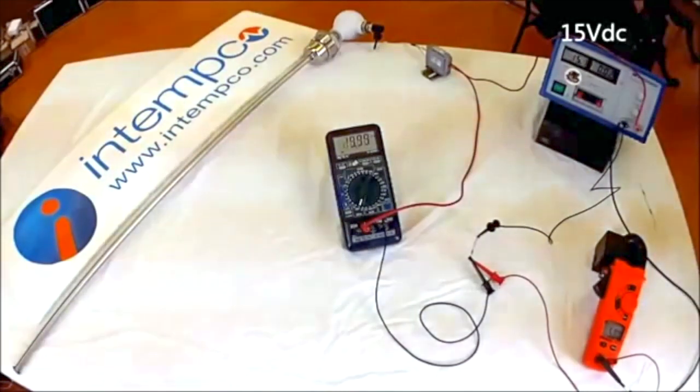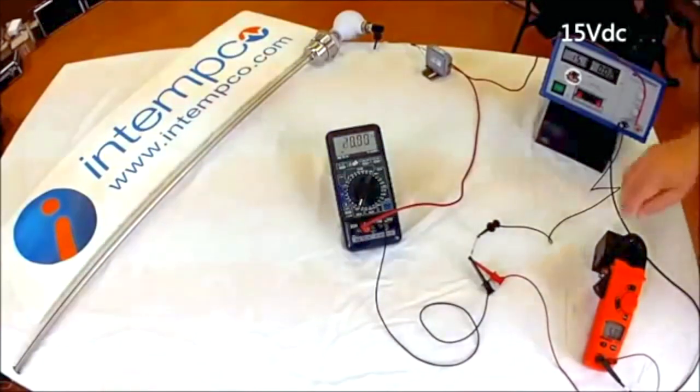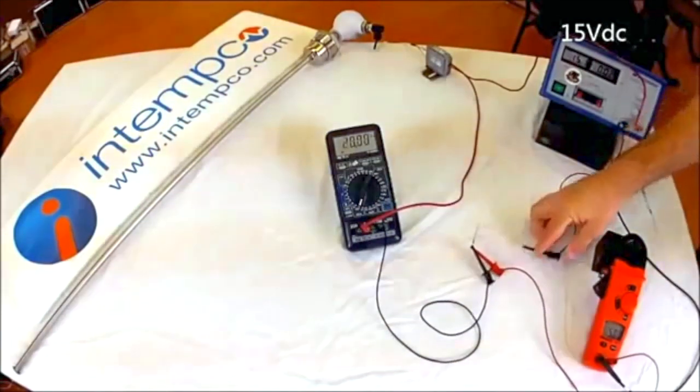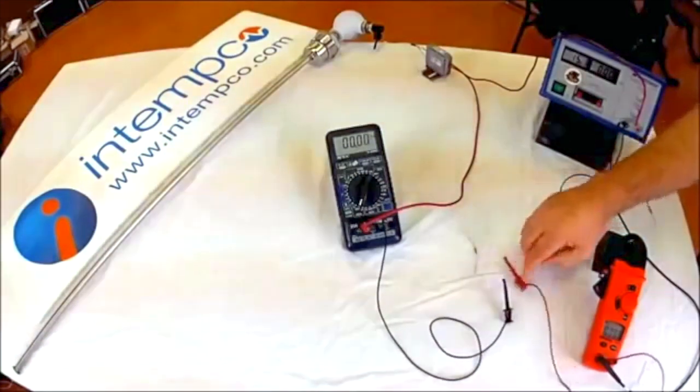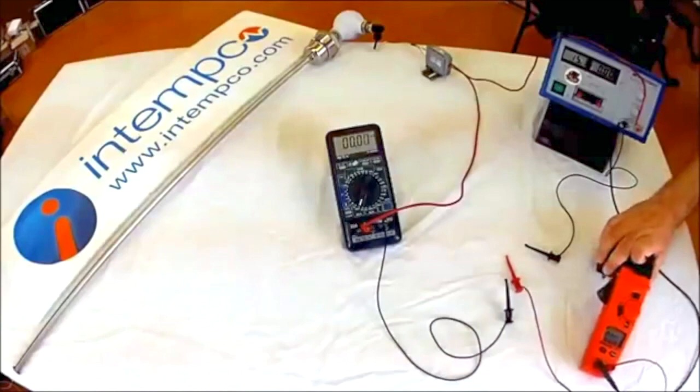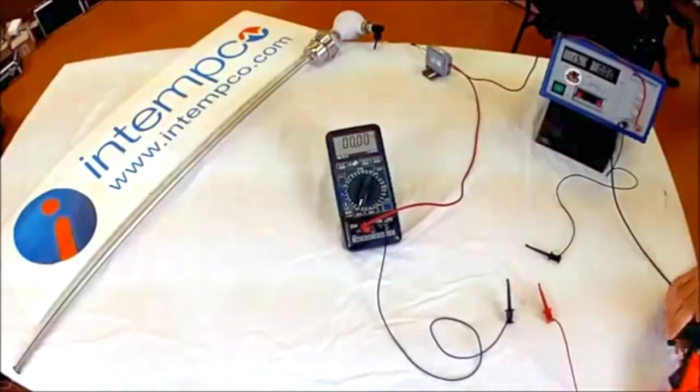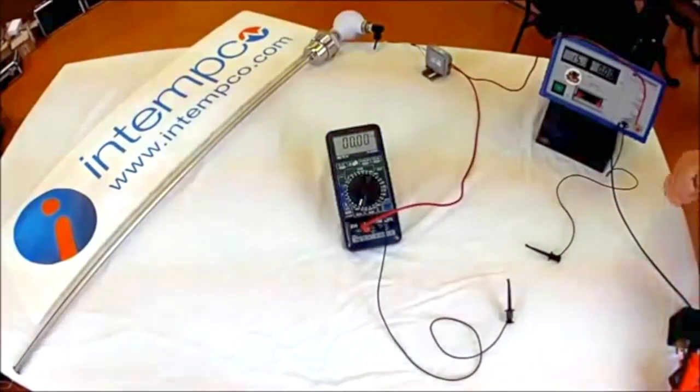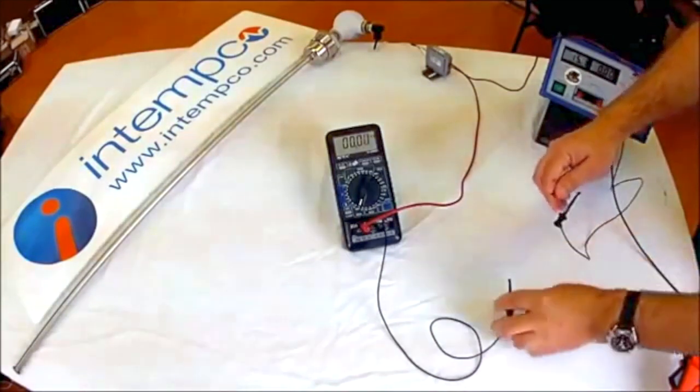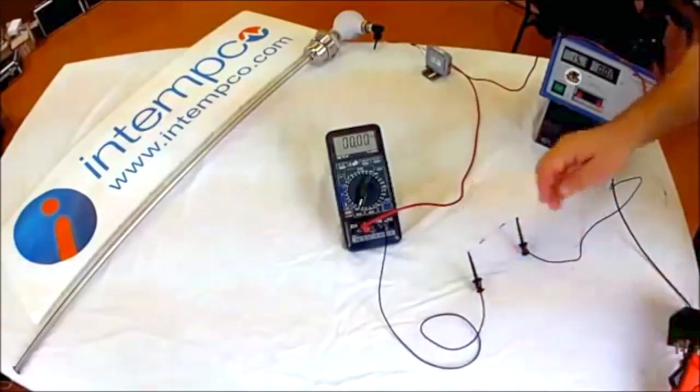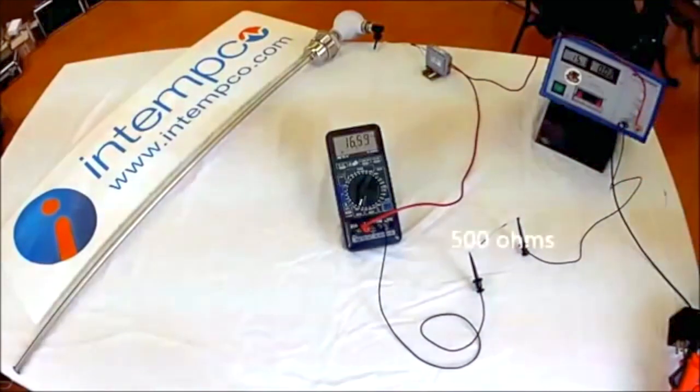Just to show the effect of having too large a resistance, I will change the resistance to 500 ohms. You can see the transmitter is not able to function properly.